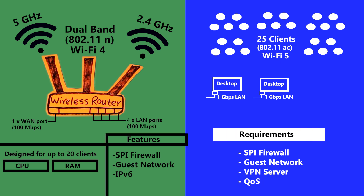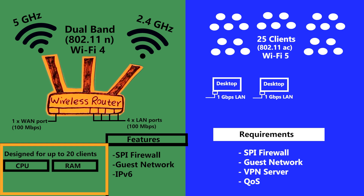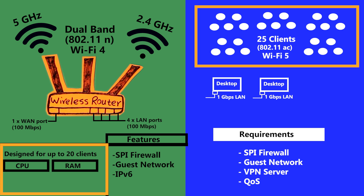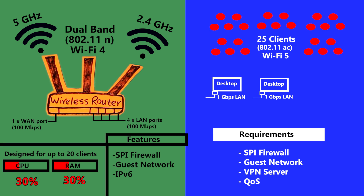Since this is actually a limitation of its software, I might be able to fix it by installing third-party firmware such as DDWRT — something we've talked about a lot on this channel. But unfortunately, there is no magic software to fix hardware limitations. For example, this router is designed for a network up to 20 clients, which is less than the 25 clients I need. Connecting all of them would likely overload the router, resulting in slow connections, packet loss, and intermittent reboots and crashes.